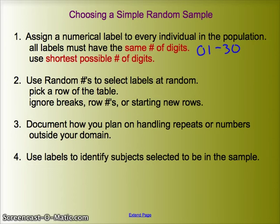If I have 100 people, I want to use the shortest number of possible digits. Well, you might think I'll go 001 to 100, but that's actually not the shortest number of possible digits. The shortest is 00 to 99. That's 100 numbers, and it's the shortest possible number of digits.